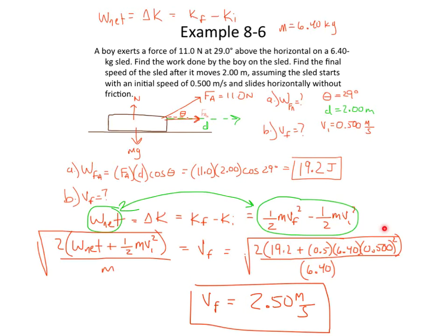So that's our example 8.6, the sliding sled. Again, we have our use of the work kinetic energy theorem. Work done is a result in a change in kinetic energy, and we're going to continue to use that this chapter. So that's it for example 8.6. Thanks for following along. I'll see you on the next one.